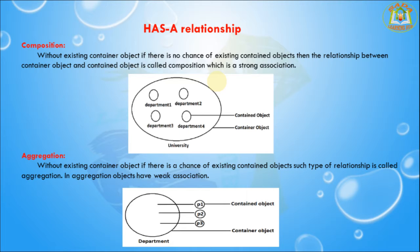Here the container object is department and the contained object is professors. Without an existing container object, there is a chance of the contained object existing. For example, without an existing department object, there is still a chance of existing professor objects. Such a type of relationship is called aggregation.